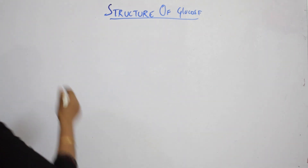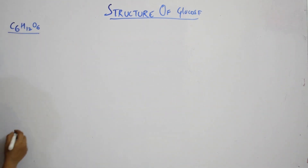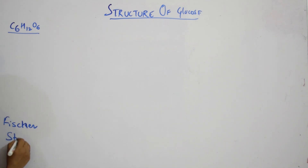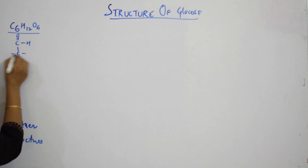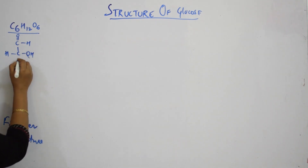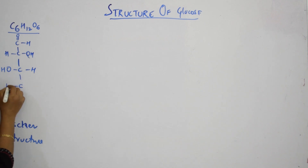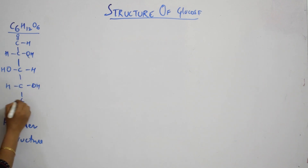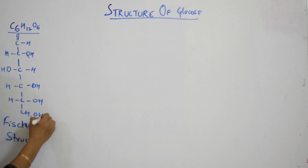The formula for glucose is C6H12O6. We are going to write Fischer structures — Fischer structures and open chain structures are the same. As we have drawn: this is your first carbon, this is your second carbon, third carbon, fourth, fifth, and your sixth carbon. This is what we drew in a previous video.